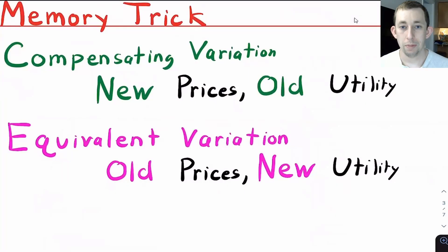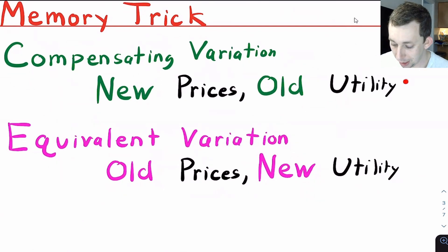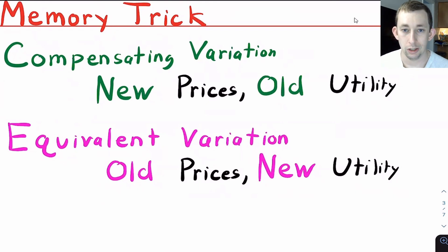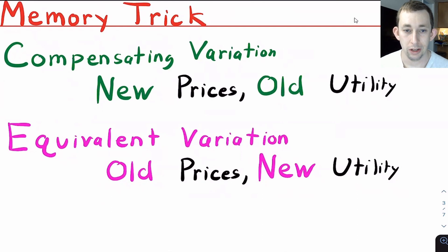Before moving on, I want to share my personal memory trick to remember compensating versus equivalent variation. Compensating variation is new prices, old utility — I'm trying to get back to the old utility level using the new prices. Equivalent variation is the opposite: I'm using old prices to try and get to the new utility. Use whatever works for you, but this is what works for me.